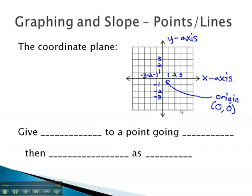We give directions to points on this coordinate plane using these two number lines. First, we give directions to the point going to the right. This is the x value. Then, we give directions going up. This is the y value.